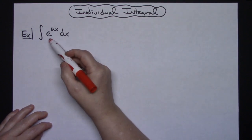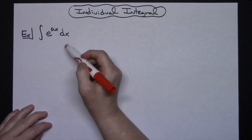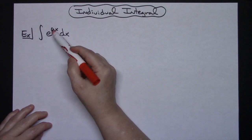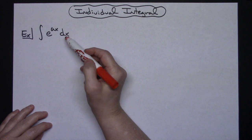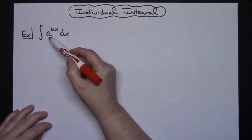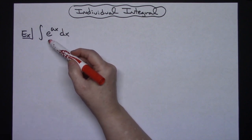So we're going to take a look at the integral of e raised to the ax dx, and that a is representing a constant. Obviously my x dx there is showing the variable. We know that e is a known constant as well.